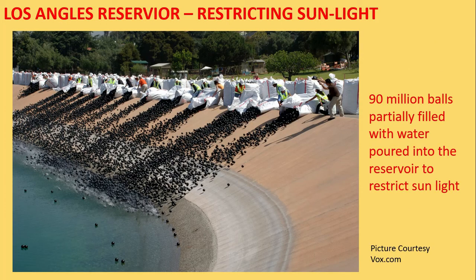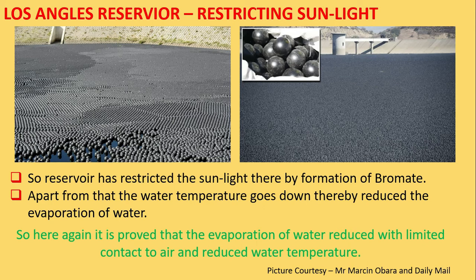They designed a ball that was partially filled with liquid so the weight would keep one side down. They poured 90 million balls into the Los Angeles reservoir. With 90 million balls poured in, it covered the entire surface of the reservoir to restrict sunlight. This picture was provided by Vox.com. After pouring the 90 million balls, the reservoir looked completely covered, and wherever there were two or three layers, the surface was fully blanketed.